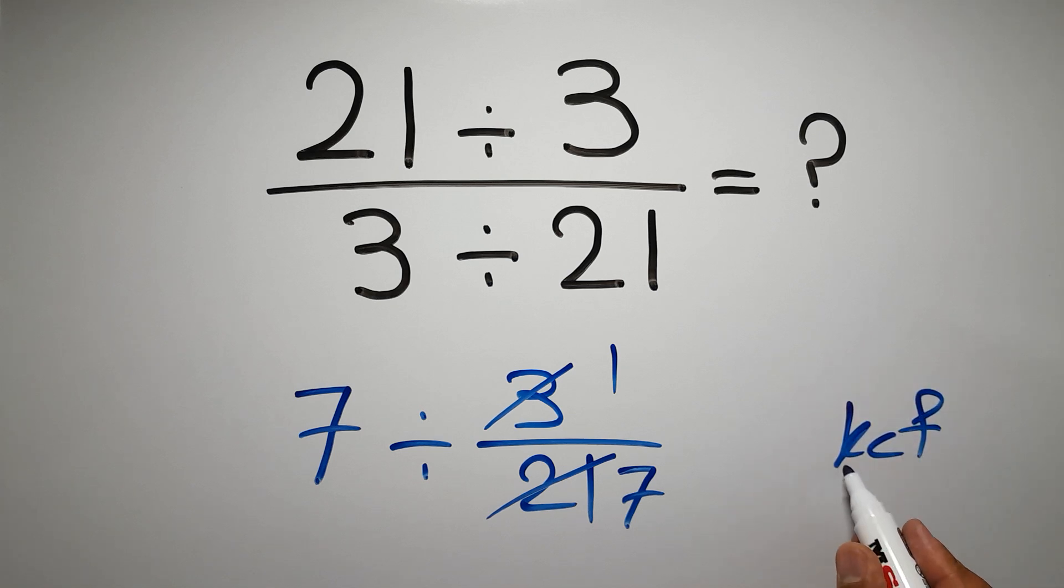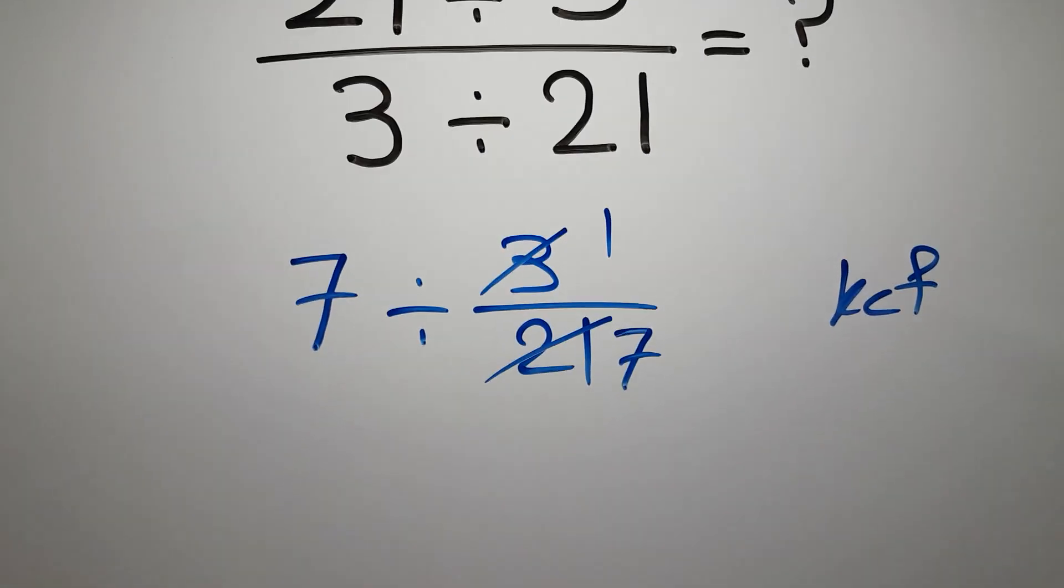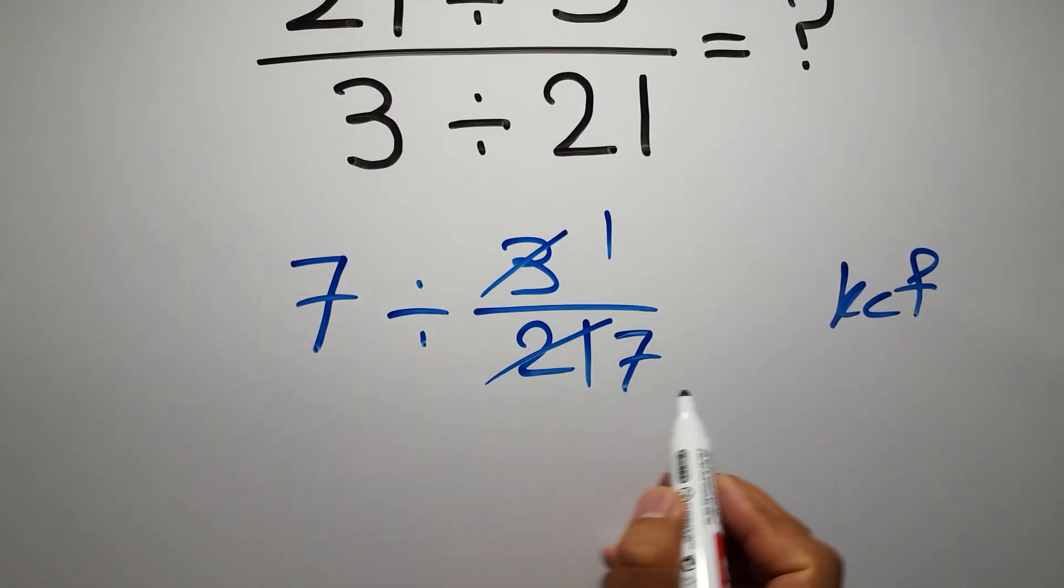According to the KCF rule: K stands for keep, C stands for change, and F stands for flip. We can write: keep the first fraction.